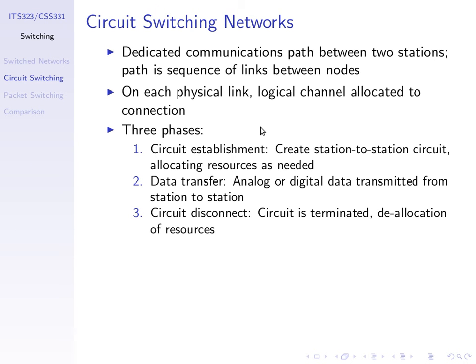There are three phases in circuit switching: first, establish the connection — establish a circuit from A to B; second, transfer the data; third, disconnect when you hang up. This is used in telephone networks and also some other data networks. All resources along that path from station to station are allocated for that circuit during the connection — once we establish a circuit we transfer data, then disconnect and deallocate the resources.